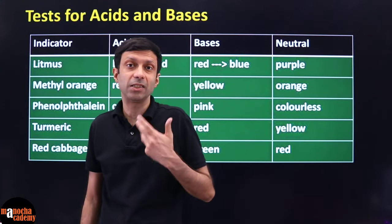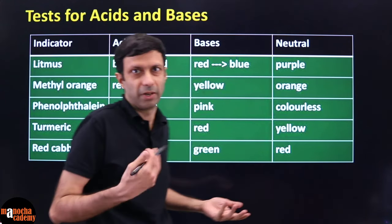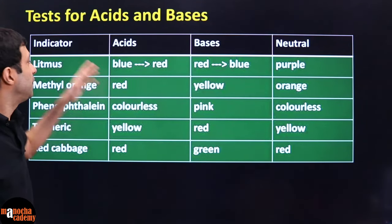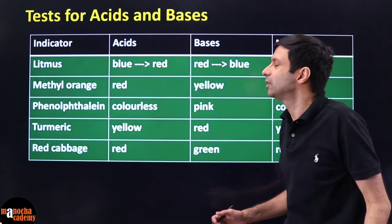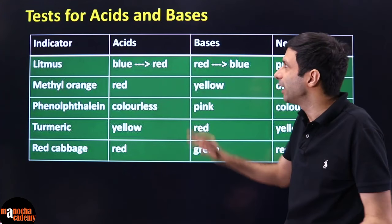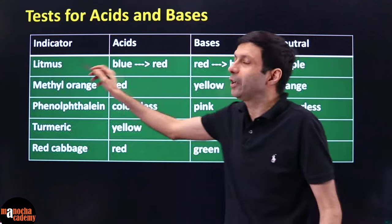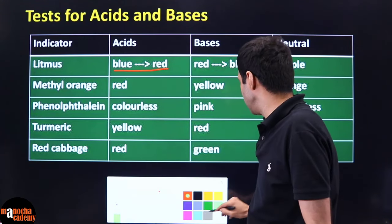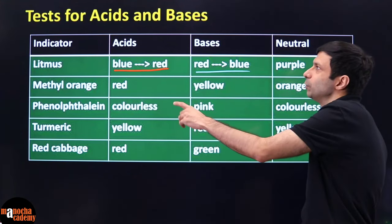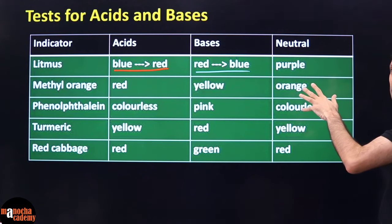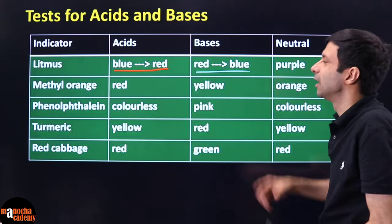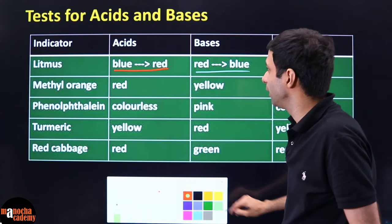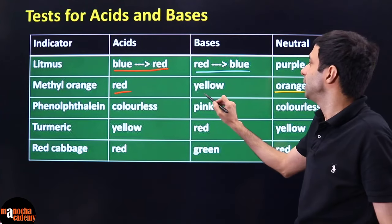How do you test acids and bases? You shouldn't taste them because strong acids can burn your tongue. We use indicator tests with chemicals such as litmus, methyl orange, phenolphthalein, and turmeric. Litmus: blue litmus turns red for acids, red turns blue for bases. The neutral color of litmus is purple. Methyl orange: neutral color is orange, turns red for acids. Red cabbage: neutral color is red, turns yellow for bases.